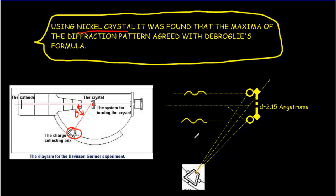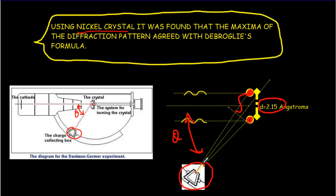You can imagine two nickel atoms with a certain spacing between them. Waves come in and reflect off those atoms and could interfere with each other. If you can fit an integral number of wavelengths into that path difference, you get constructive interference, giving a high intensity at that particular angle. As you veer away from that angle, the path difference is no longer one whole wavelength, and the intensity drops off.